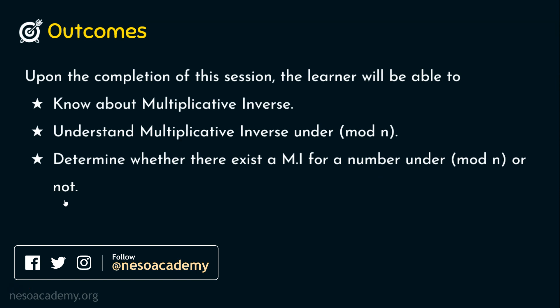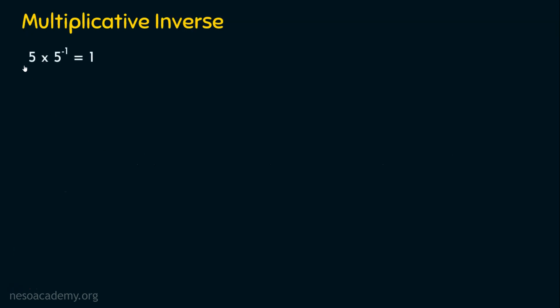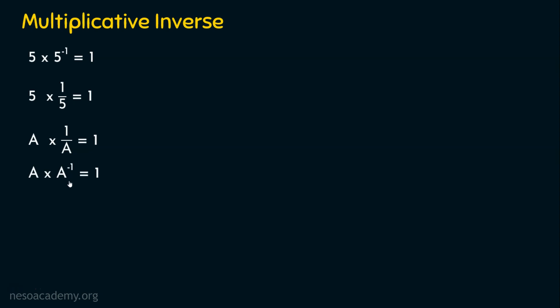Before diving into multiplicative inverse under modular arithmetic, let's understand the basics. Take the number five. When five is multiplied by its inverse, we get the result as one. So one-fifth is the multiplicative inverse of five. In general, for a number a, one divided by a is its multiplicative inverse, such that a multiplied by one-over-a equals one.